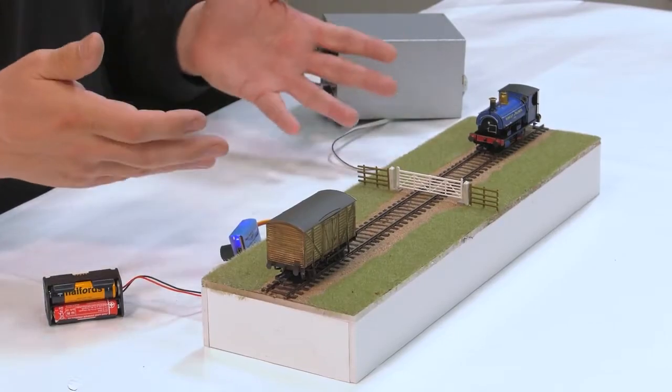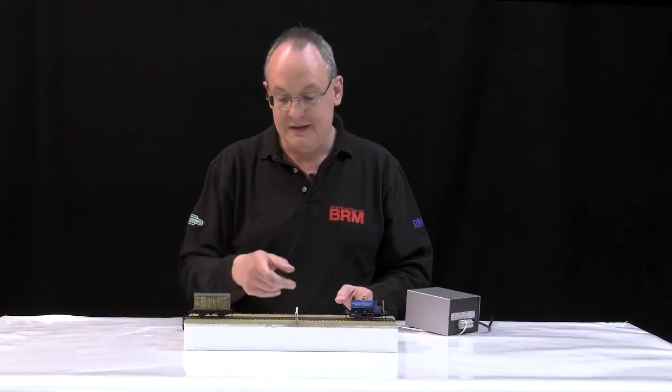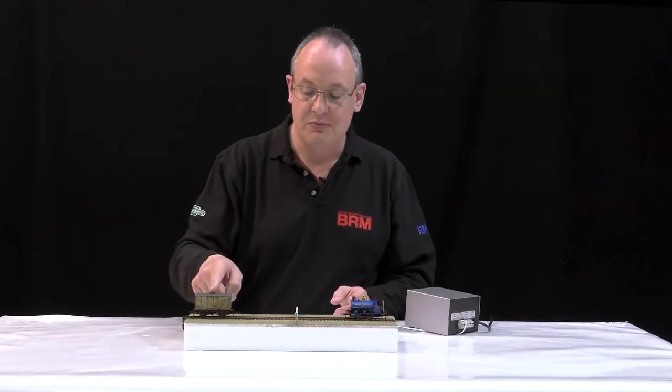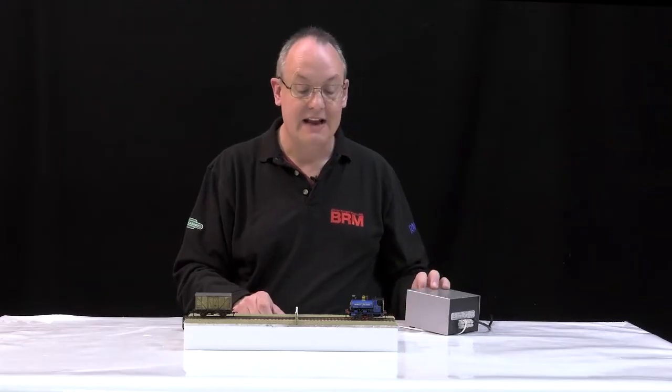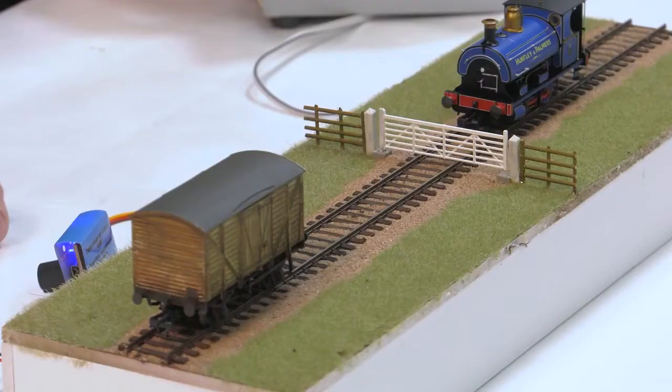Gated industrial sidings are very common. The main line people have dropped off a wagon here, we have a loco there, and we need to collect the wagon and take it into the factory.